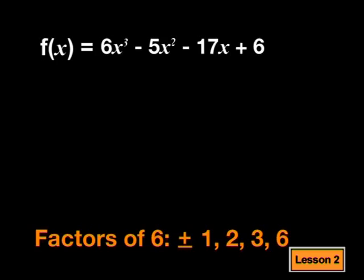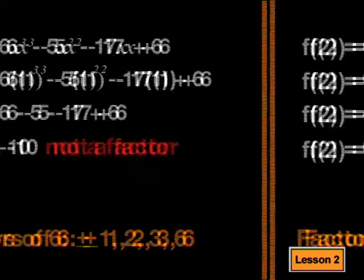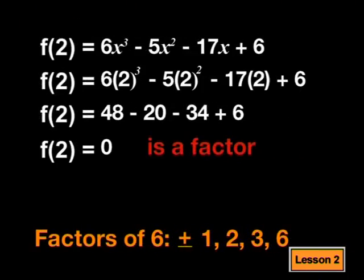We learned how to factorize a cubic function in the last lesson. First, I need to find the factors of the constant. The factors of 6 are plus or minus 1, 2, 3, or 6. Then we substitute each of these into the expression until we find a factor of the equation by trial and error. I'll try 1 first — substituting 1 into the expression gives me negative 10, so x minus 1 isn't a factor. Let me try 2. I substitute 2 for x, which gives me 0. So x minus 2 is a factor.